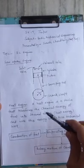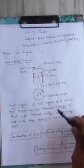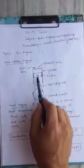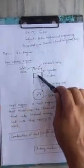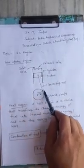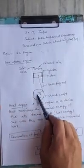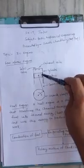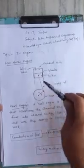Let's visualize this simple model of a four-stroke engine. This is the cylinder, and this is the piston. The piston is connected to the crankshaft by means of a connecting rod and a crank.